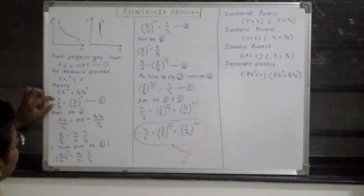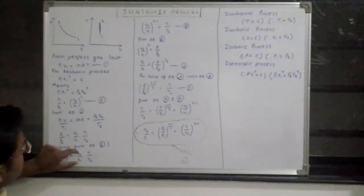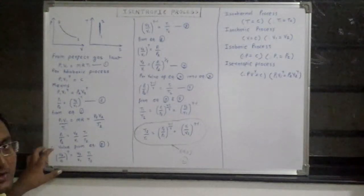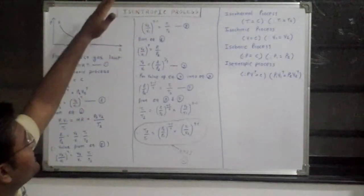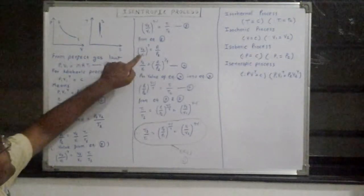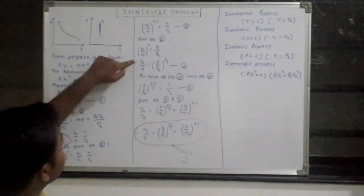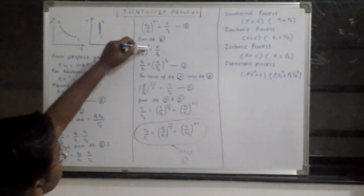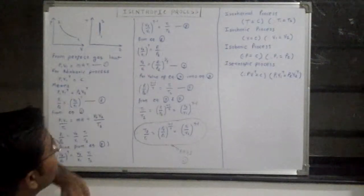Taking P1 by P2 from this equation and substituting it into equation 2, we get: V2 by V1 raised to gamma equals V2 by V1 times T1 by T2. This gives us equation number 3: V2 by V1 raised to gamma equals T1 by T2. From equation number 2, V2 by V1 raised to gamma equals P2 by P1, so V2 by V1 equals P1 by P2 raised to 1 upon gamma. This is equation number 4.